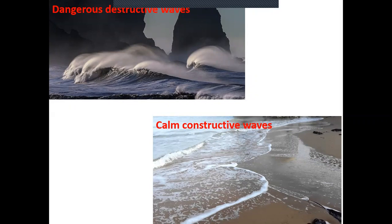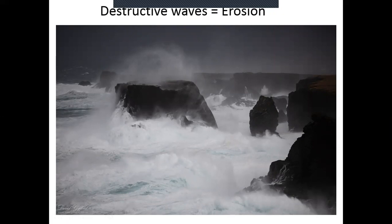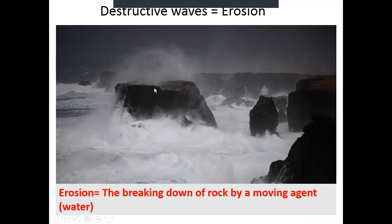What is the difference in terms of the physical processes that happen in these types of waves? In this first picture, we have powerful waves hitting against the stack and the cliffs. This is the west coast of Ireland — the wind has been traveling across these waves since America, so there's a big fetch. These are destructive waves, and they're going to cause erosion: hitting against the stack, weakening it, breaking it down, removing bits of rock that have fallen off, and transporting them out to sea. Erosion is the breaking down of rock by a moving agent — in this case, the sea. So destructive waves cause erosion.